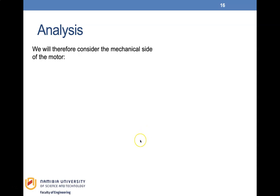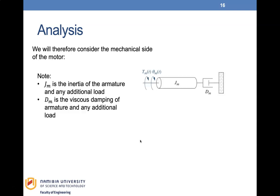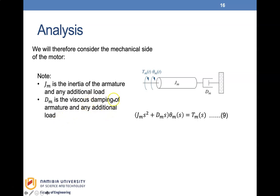We consider the mechanical side of the motor. The motor drives a load with inertia JM — the inertia of the armature and any additional load — and DM, the viscous damping of the armature and any additional load. Writing the rotational mechanical system equation: (JM·S² + DM·S)·θM(S) = TM(S). This is equation nine.